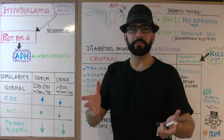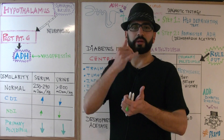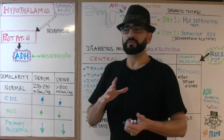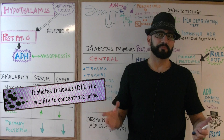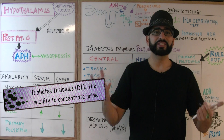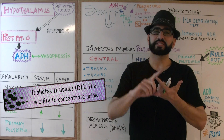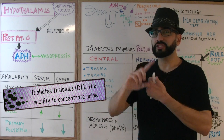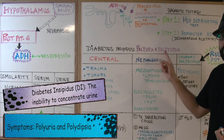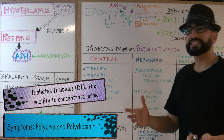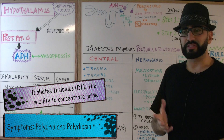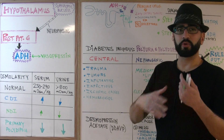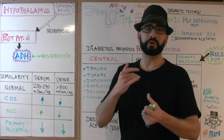Now we talk about what happens when antidiuretic hormone is not produced properly or is not working on the kidney properly — that's what diabetes insipidus refers to. In diabetes insipidus, the patient is going to present with two symptoms: polyuria and polydipsia. Polyuria means excessive urination and polydipsia means excessive thirst. That naturally makes sense — the more a patient urinates, the thirstier they get, so they drink more and more water.